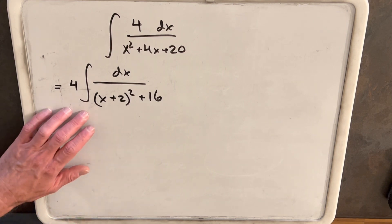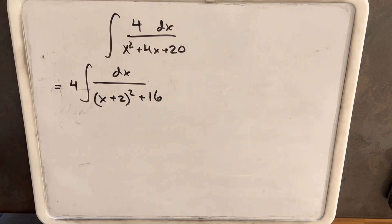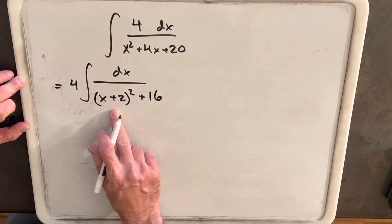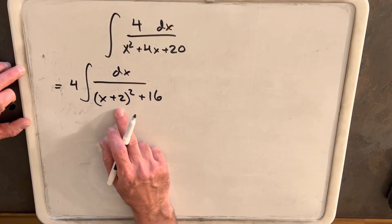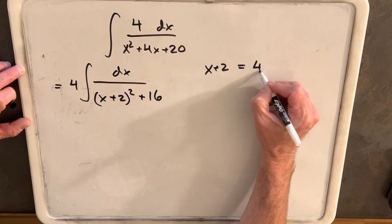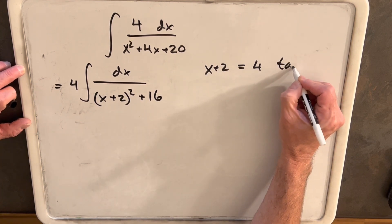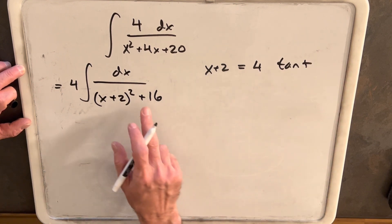And now at this point we're in good shape for a trig substitution. It's not quite the easiest trig substitution in the world, but it's still not too bad. So what I'm going to do is substitute for x plus 2. We're going to call x plus 2 and we'll substitute 4 tan of t here. By 4 because when we square that, we want this to be 16.